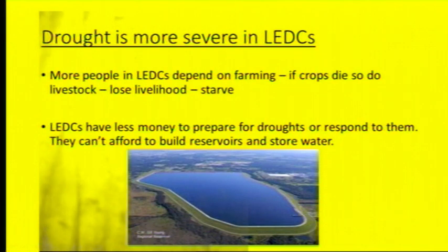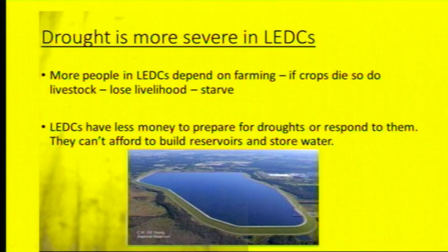Drought is more severe in LADCs because generally people depend on farming. So if the crops die, so does their livestock, and they're going to lose their livelihoods, income, and are likely to starve. LADCs also have less money to prepare for droughts or respond to them, so they can't afford to build reservoirs to store water, which means that when drought happens, they don't have a backup.